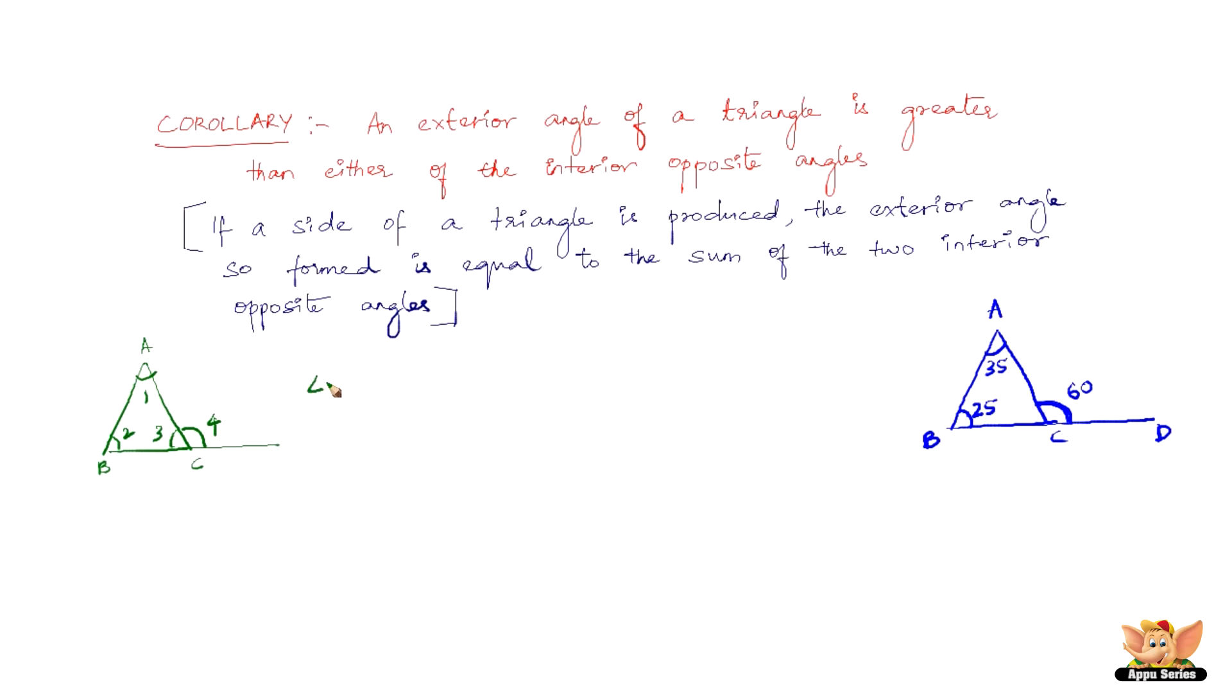Now we know that angle 1 plus angle 2 equals angle 4. Angle 4 is greater than angle 1 and angle 4 is greater than angle 2.